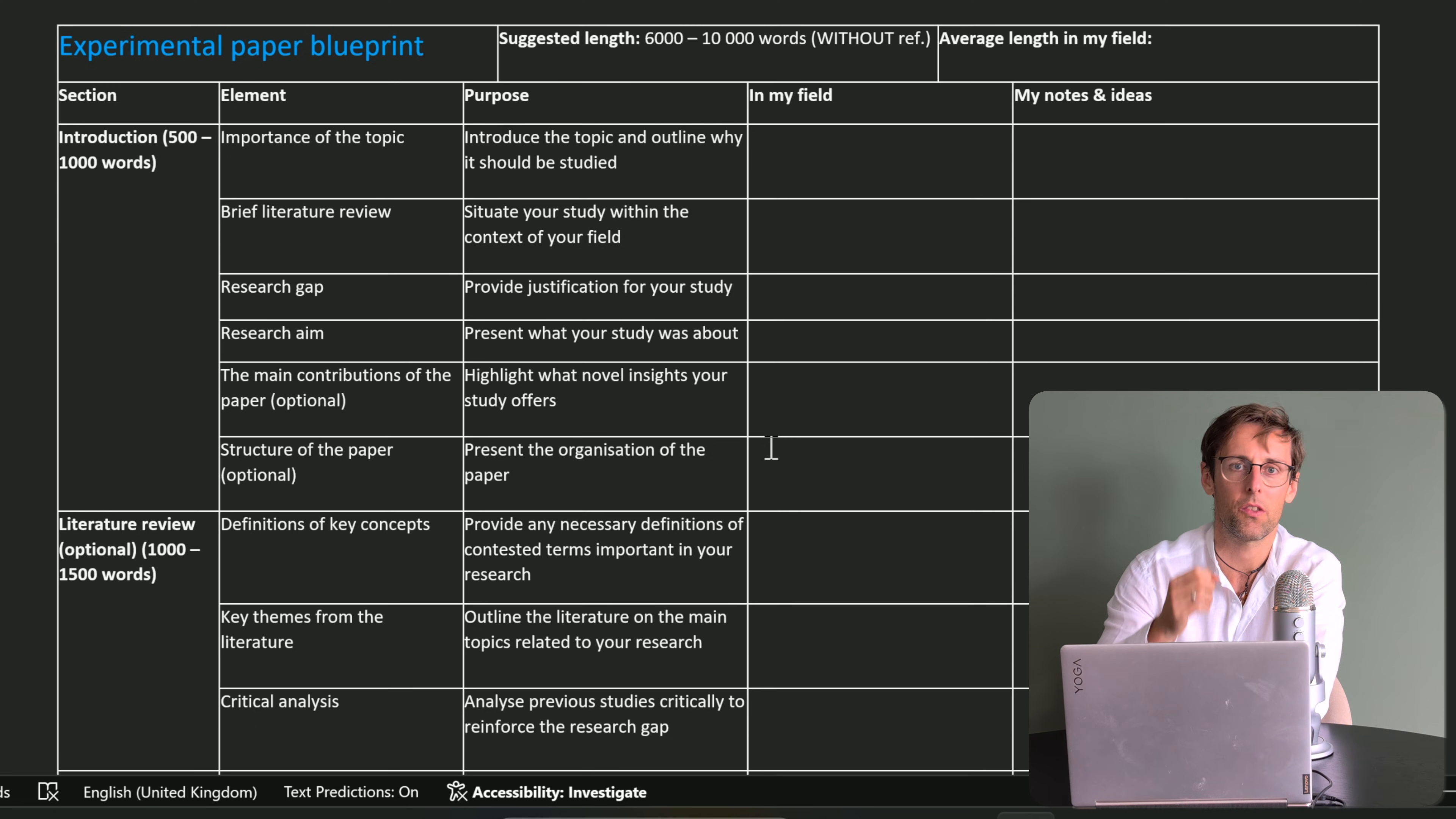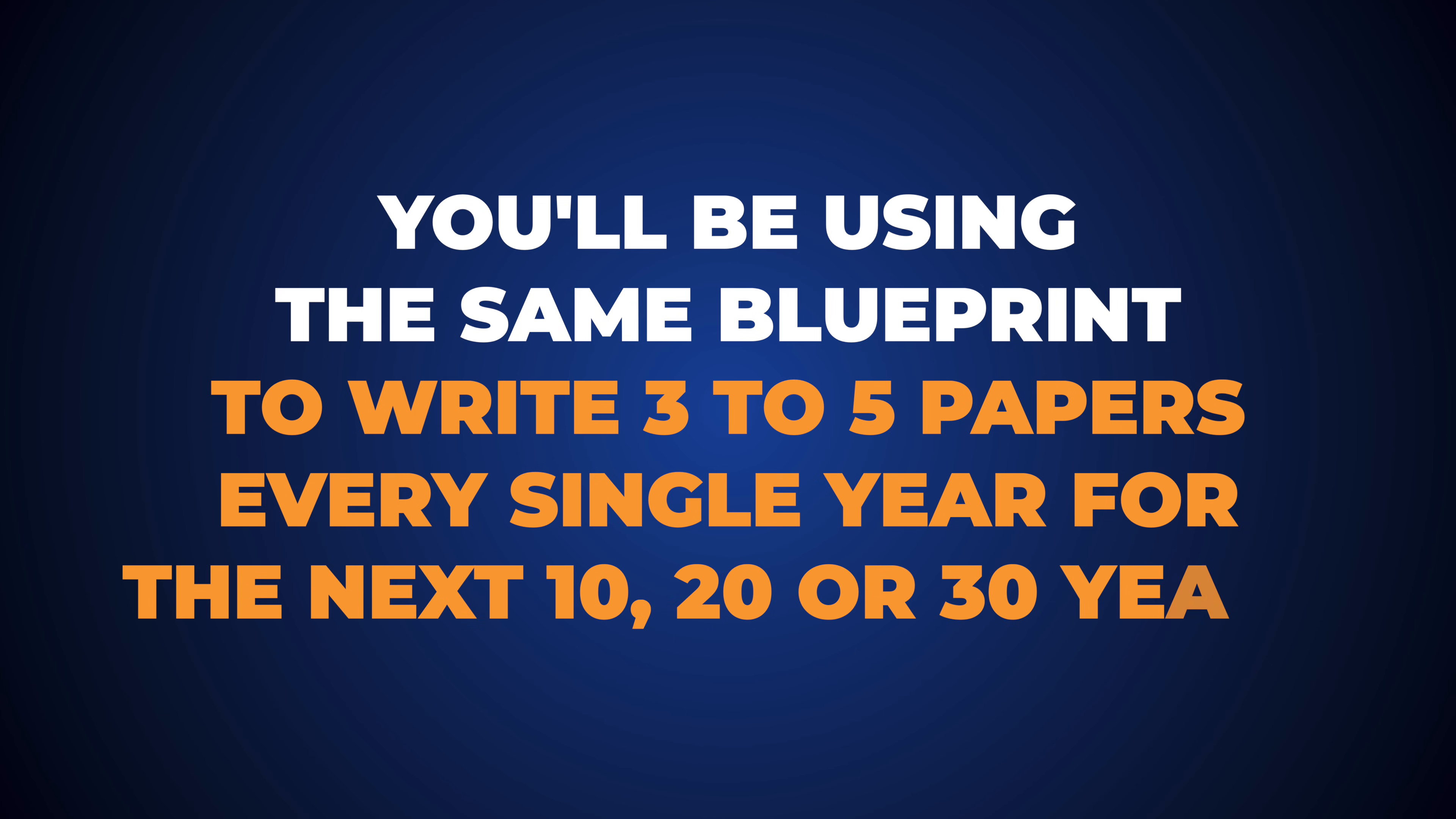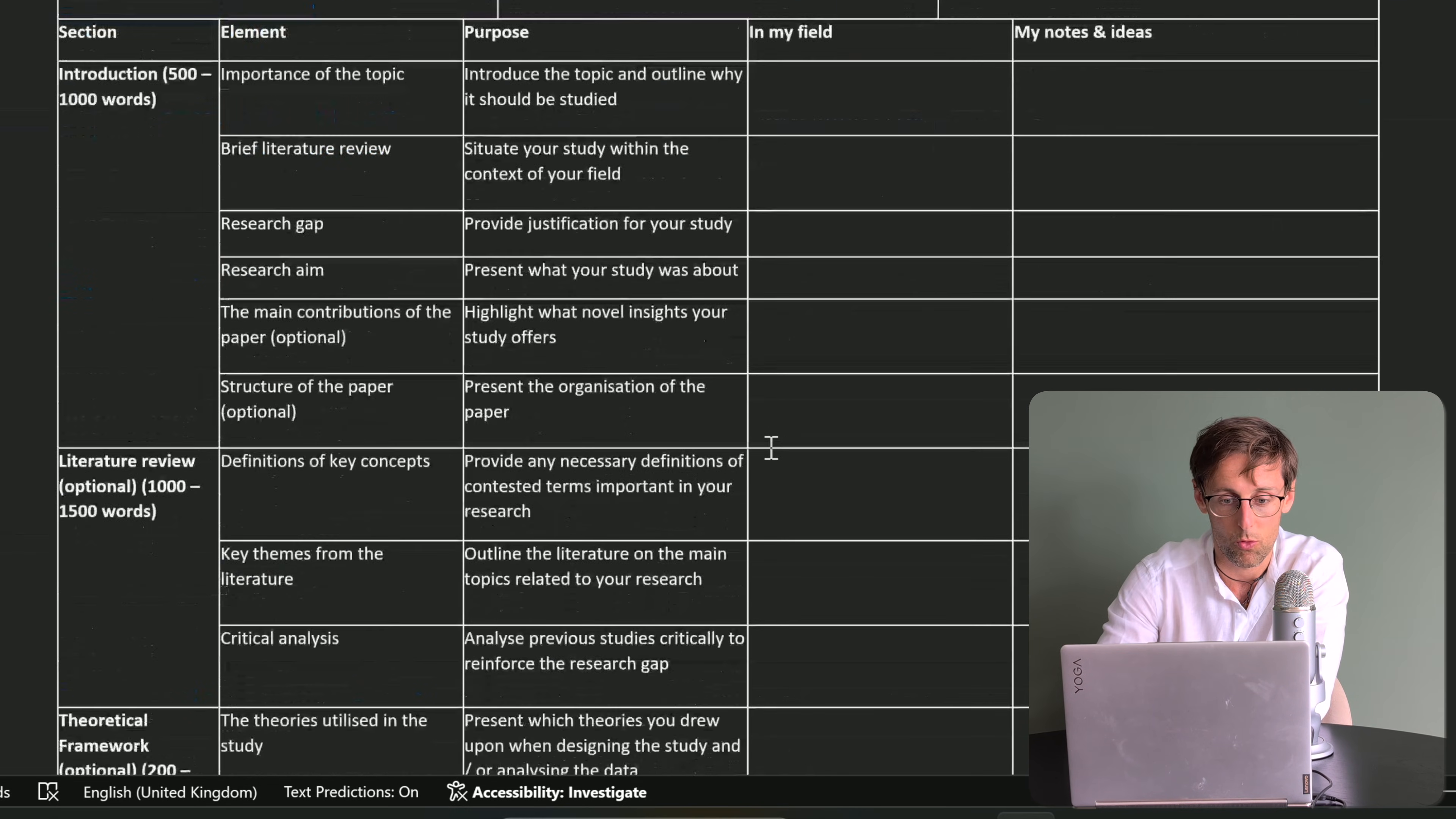Here's what this blueprint looks like. What you'll need to do is adjust it to the particular journal where you want to publish or to your particular field more broadly. This will involve some initial work and time spent, but this is the best time investment you can make because then you'll be using that same blueprint to write three to five papers every single year for the next 10, 20, maybe even 30 years of your research career. If you think how many hours this is going to save you, investing two or three hours right now to adjust this blueprint for your particular field is the best time investment you can make.